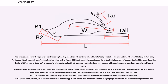The emergence of ornithology as a scientific discipline began in the 18th century, when Mark Catesby published his two-volume Natural History of Carolina, Florida, and the Bahama Islands, a landmark work which included 220 hand-painted engravings and was the basis for many of the species Carl Linnaeus described in his 1758 Systema Naturae. Linnaeus's work revolutionized bird taxonomy by assigning every species a binomial name and categorizing them into different genera. Ornithology did not emerge as a specialized science until the Victorian era, with the concept of natural history and the collection of natural objects such as bird eggs and skins. This specialization led to the formation of the British Ornithologists' Union in 1858, and in 1859 its journal The Ibis was founded.